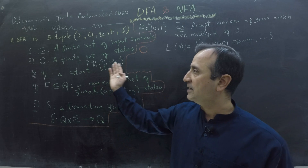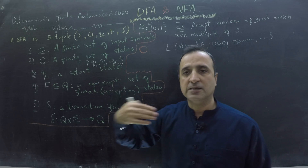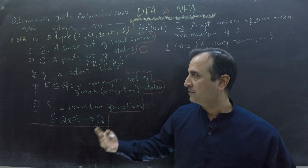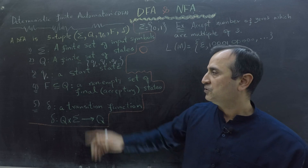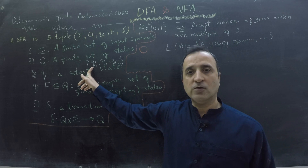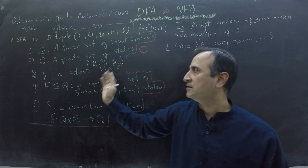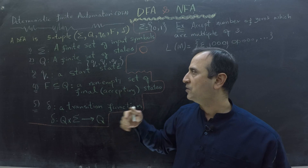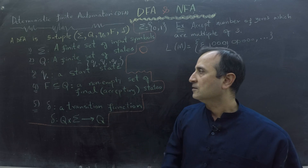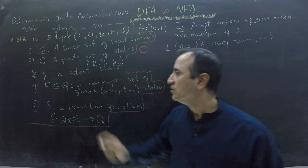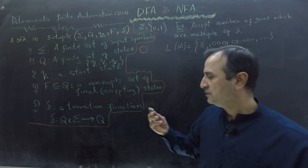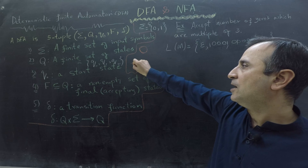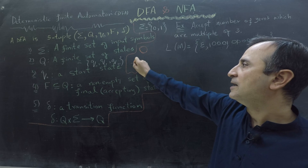One of those states must be the start state, from where our machine starts. Usually we keep Q0 as the start state, so in this case Q0 is my start state — but the start state can have any name. Graphically, I show the start state by a circle with an incoming arrow to that circle.